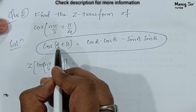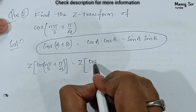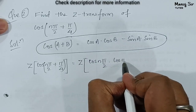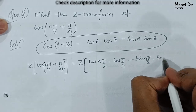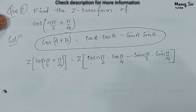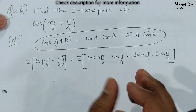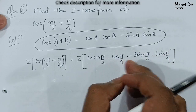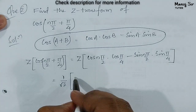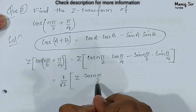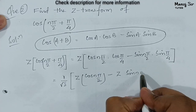Comparing with cos(a + b), we identify a = nπ/2 and b = π/4. So this becomes the Z transform of cos(nπ/2)·cos(π/4) − sin(nπ/2)·sin(π/4). Since cos(π/4) and sin(π/4) both equal 1/√2, which is a constant, we can factor out 1/√2 from both terms, giving 1/√2 times [Z{cos(nπ/2)} − Z{sin(nπ/2)}].